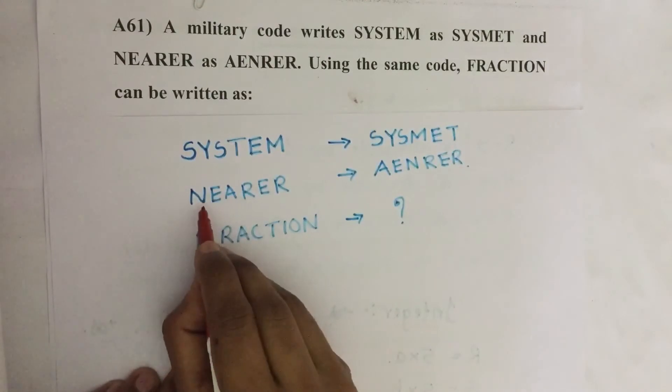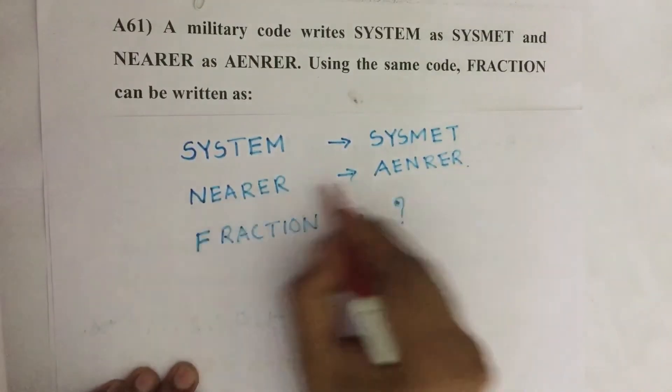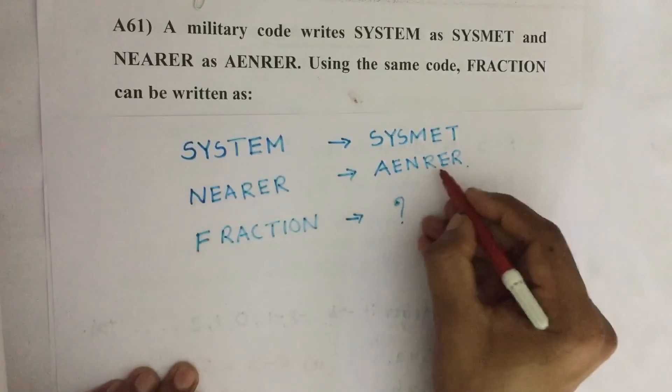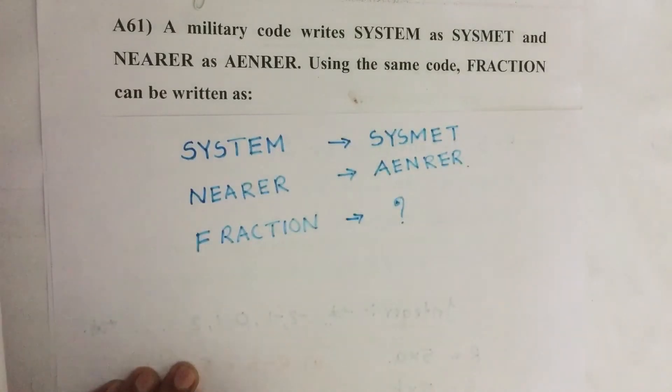Similarly here, NEARER: NEA reversed becomes AEN, RER reversed becomes RER.